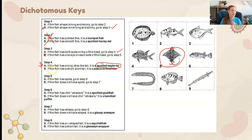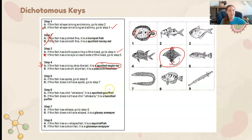On the other hand, if it had a short blunt tail, it was a Peacock Flounder. There's an eye here and an eye here, and a short blunt tail — this would be your Peacock Flounder, but that's not what we have. So this is the process of using a dichotomous key to classify organisms.